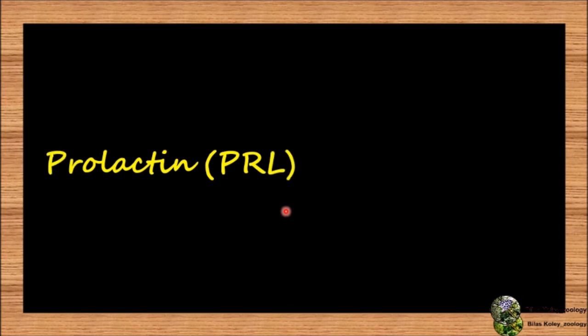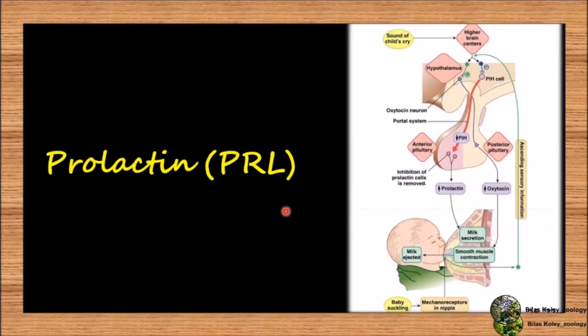We will discuss prolactin. It is also called lactogenic hormone, prolactin hormone, mammotrophic hormone, or luteotrophic hormone. It is peptide in nature. Proliferation of mammary glands and formation of milk after the birth of a baby is its main physiological effect. In birds like pigeon and dove, it stimulates formation of crop gland.